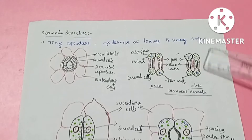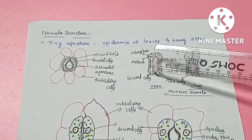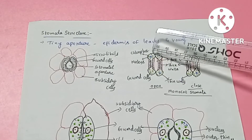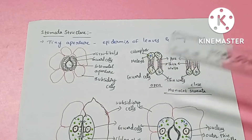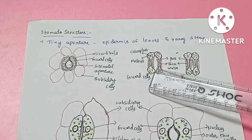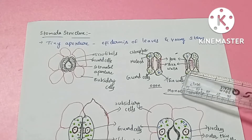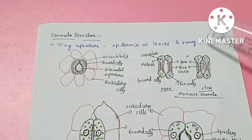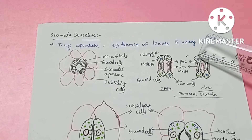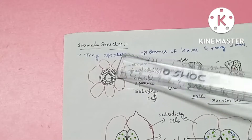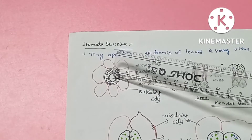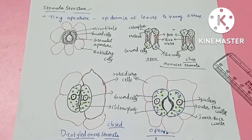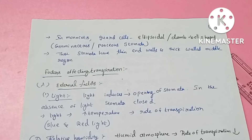Gramineae are grasses or monocots. Their guard cells have thin end walls and thick middle walls. The inner walls are thick and the outer walls are thin. This is about the structure of stomata.